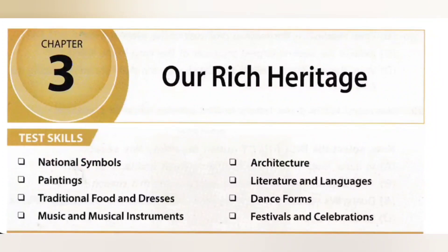In this video, we are going to see Chapter 3, Our Rich Heritage from MTG Social Science Olympiad Workbook of Class 4. The skills covered in this chapter are National Symbols, Paintings, Traditional Food and Dresses, Music and Musical Instruments, Architecture, Literature and Languages, Dance Forms, and Festivals and Celebrations.